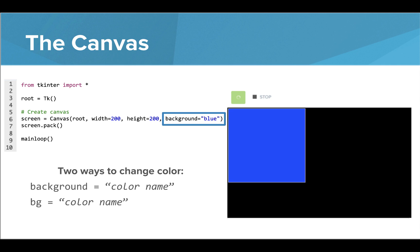We can also change the background color of this canvas, because we obviously want to use colors other than gray. We can use one of these two attributes to change color, either the word background or simply the letters bg. We place color names inside quotation marks.